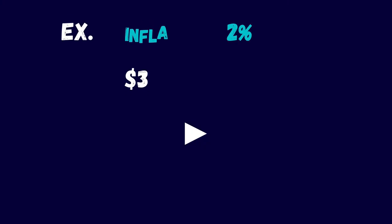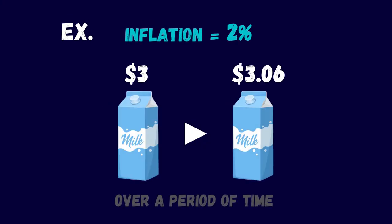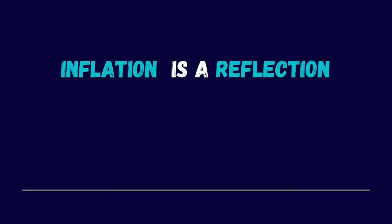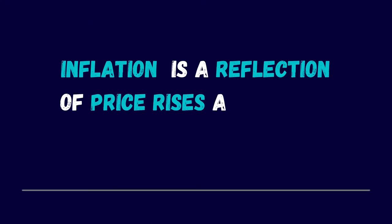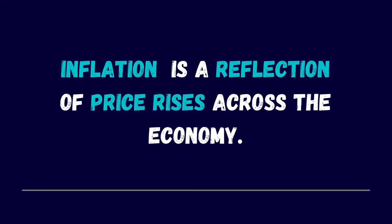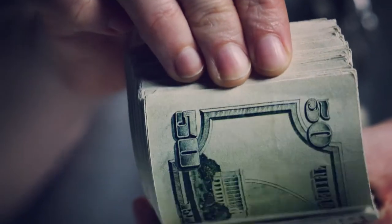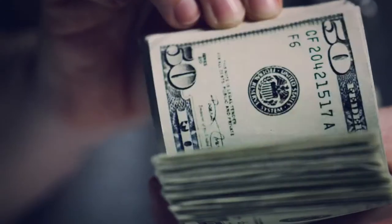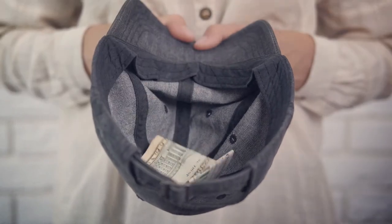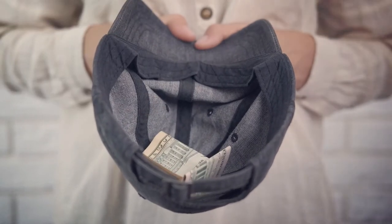So if inflation is 2%, a $3 box of milk will now cost $3.06. It may not seem to be much, but keep in mind that inflation is a reflection of prices across the economy. People whose earnings do not grow in sync with the cost of living may be unable to maintain their current lifestyles due to excessive inflation.